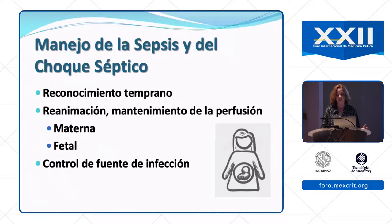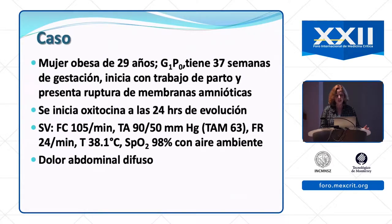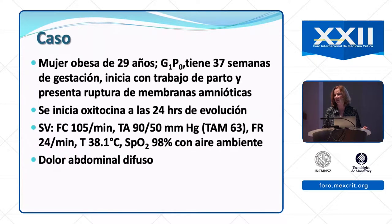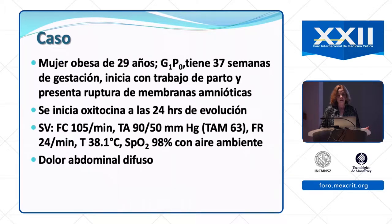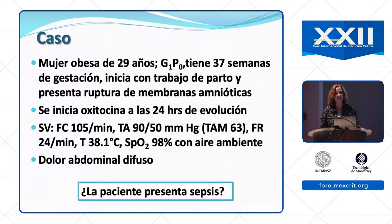Here's a case: an obese woman, 29 years old, in her first pregnancy at 37 weeks of gestation. She has onset of labor with premature rupture of her amniotic membranes. After 24 hours of labor, the decision is made to start oxytocin. Her heart rate is 105, blood pressure 90/50, respiratory rate 24, temperature 38.1°C, with good oxygen saturation but diffuse abdominal pain. Does this patient have sepsis?